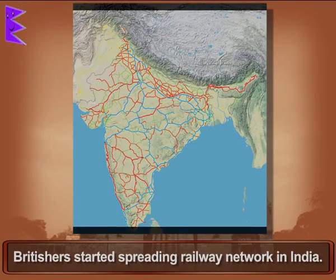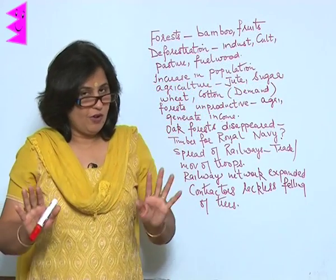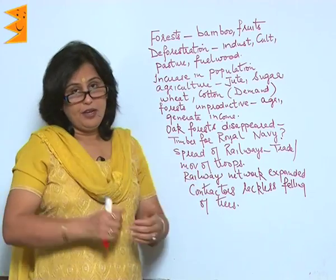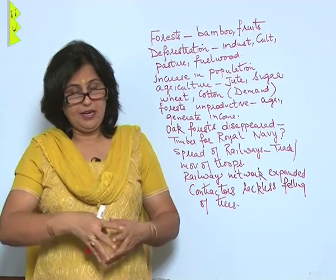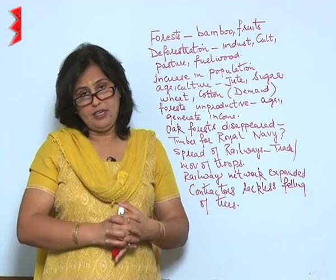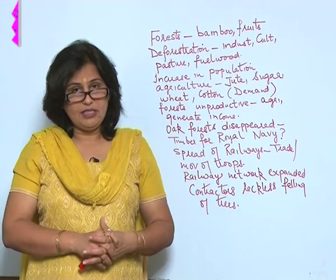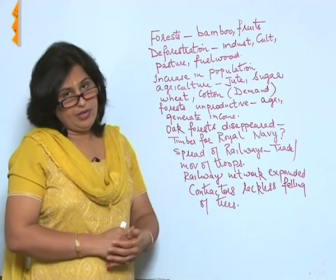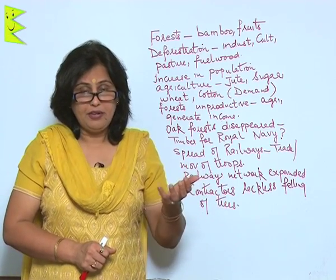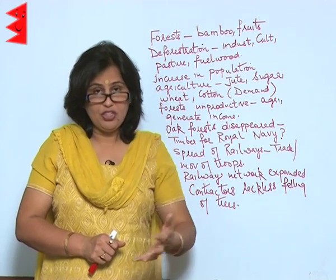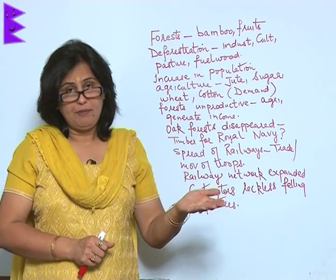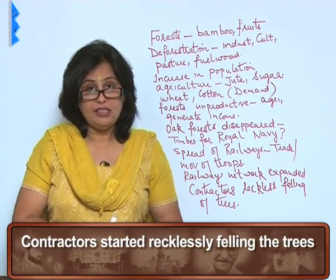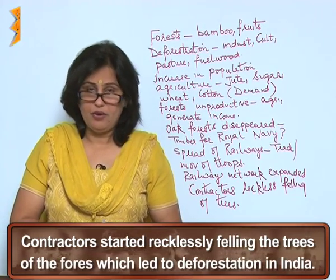Next, the Britishers started spreading the railway network in India — not for any benefit of the Indians, but because they wanted to facilitate trade and the movement of troops. So that whenever there was a rebellion in any part of India, it would be quicker and easier for the British to move troops there. The railways were considered the lifeline of the British Raj. As the railway network expanded, the need for timber was felt, so contractors started recklessly felling the trees of the forest, which meant deforestation in India.